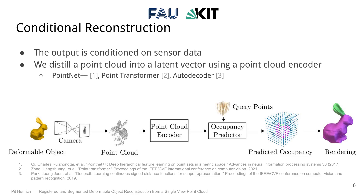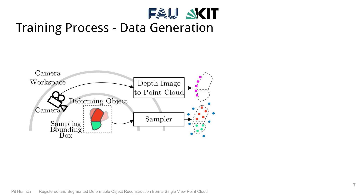Our approach is strictly supervised. We therefore need data pairs of point clouds — our sensor data — and correctly labeled occupancy query points. For this, we use a virtual scene containing a deforming object and a camera. To obtain a single training example, the object is deformed randomly and the camera captures a depth image. At the same time, a sampling algorithm samples points inside the object's bounding box and labels them depending on what segment, if any, the points are inside. The way points are sampled — for example, how close the samples are to the object surfaces — directly influences reconstruction quality. In our paper, we present a novel sampling method that prevents some of the biases present in other current work.